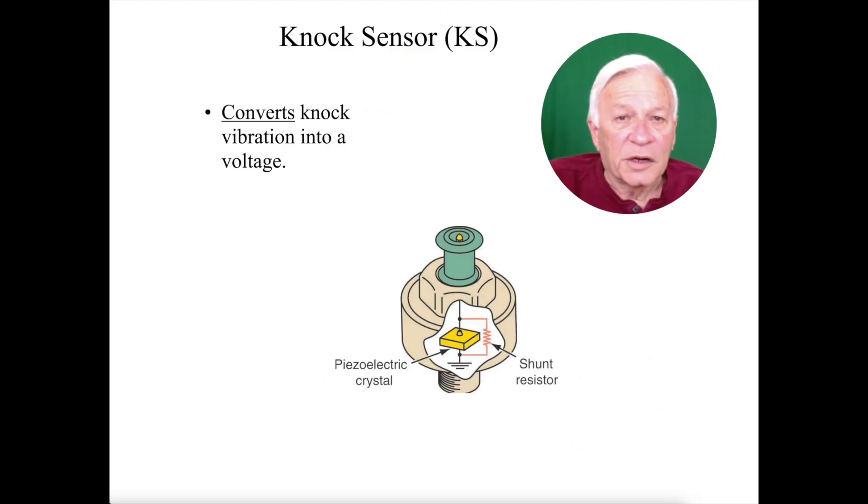A knock sensor converts knock vibration into a voltage. We might hear the knocks, but we can't count how many knocks there are. However, since they are converted to a voltage, we can now measure them.